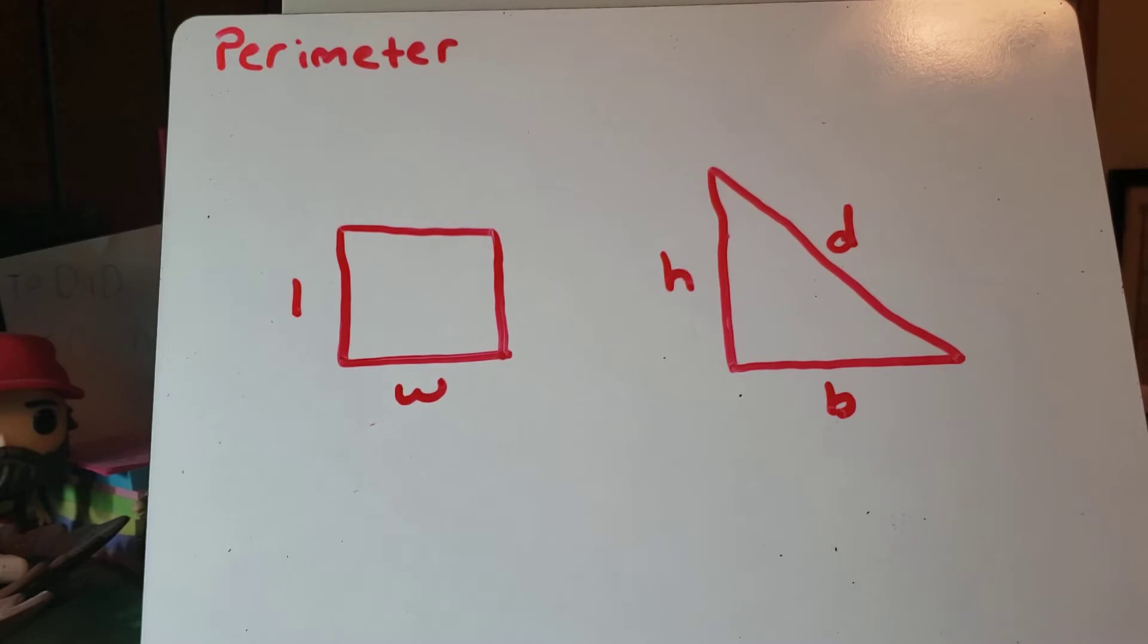And even some weird shapes, like for instance, something that looks like a house or something that has a triangle on top of a rectangle. And perimeter, all perimeter is, is figuring out how much distance it is around a shape.